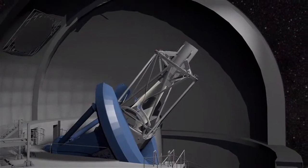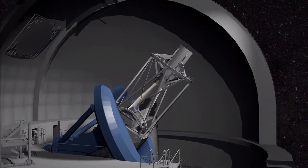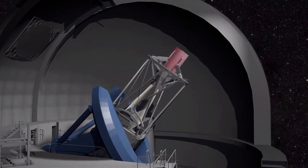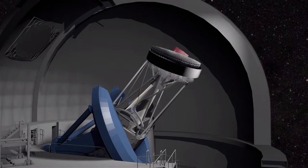After passing through the set of lenses, the galaxy's light reaches fiber optic cables in DESI's focal plane, at the top end of the telescope.